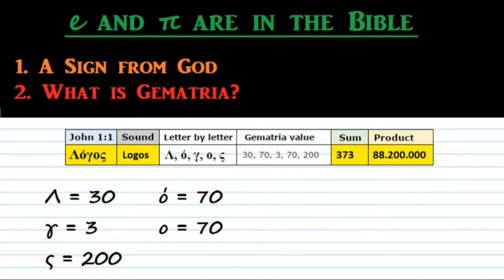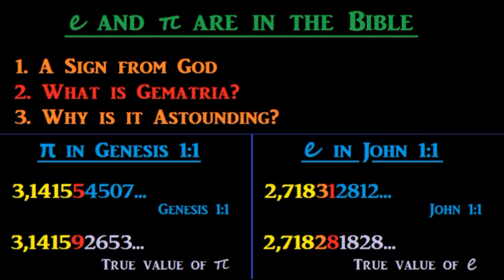In the second episode, we'll talk about the ancient art of gematria that was used to encode e and π in the Bible. In the third episode, we'll discuss why it is astonishing that e and π appear in the Bible, why it doesn't fit with everything modern people currently believe about the history of mankind, and so, why it implies that they will have to consider the way they see the world.